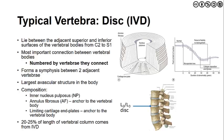Intervertebral discs are present from C2 down to S1. There are no discs between the OA and AA joints — the craniovertebral region is unique in this regard. Discs are the most important connection between individual vertebral bodies and are numbered by the vertebrae they connect. For example, the L2-3 disc connects the L2 vertebral body to the L3 vertebral body, forming a symphysis between those vertebrae.